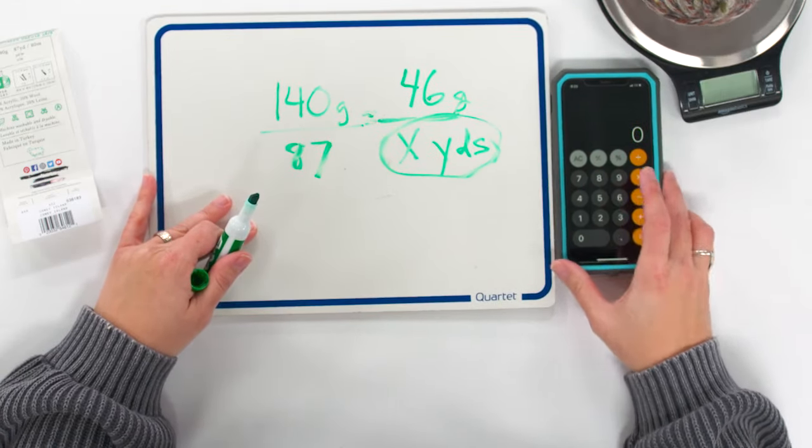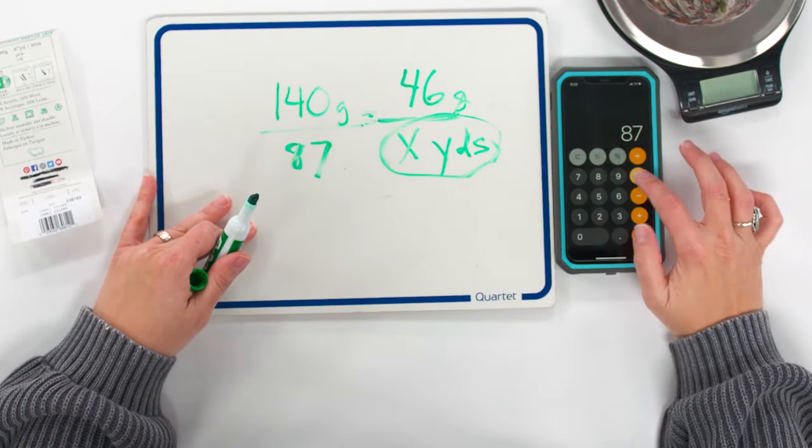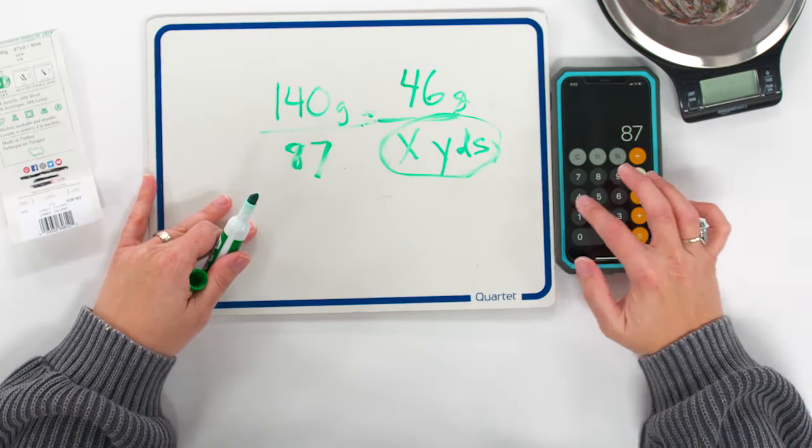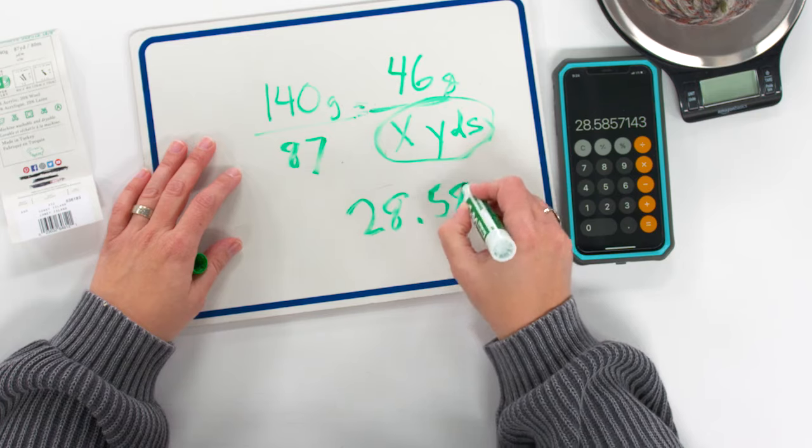Once you have that information, you can weigh your ball of yarn on a kitchen scale. This is just a simple, inexpensive kitchen scale, and you'll check what unit you have it on. Right now I have it on grams, which I'll leave it on. Just make sure you're using the same unit as on your ball band.